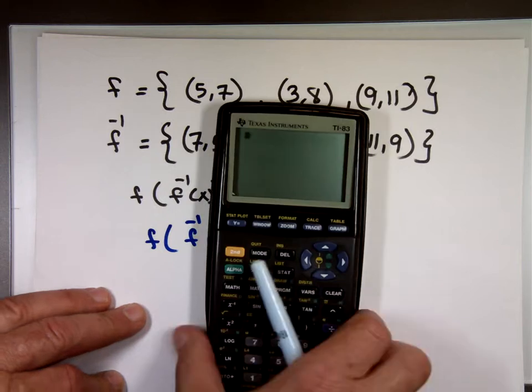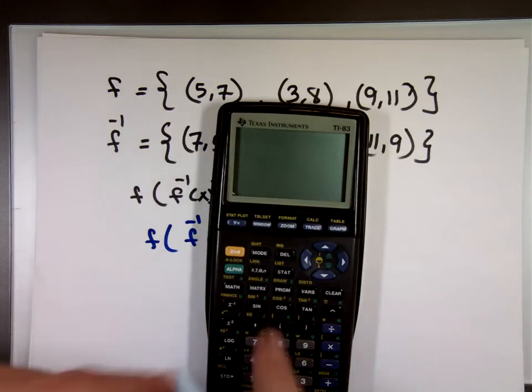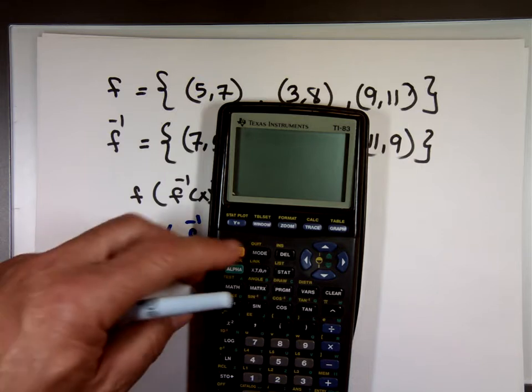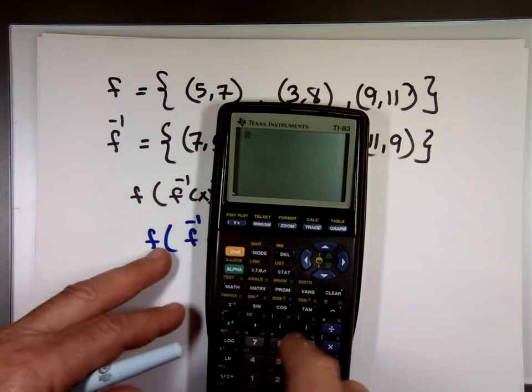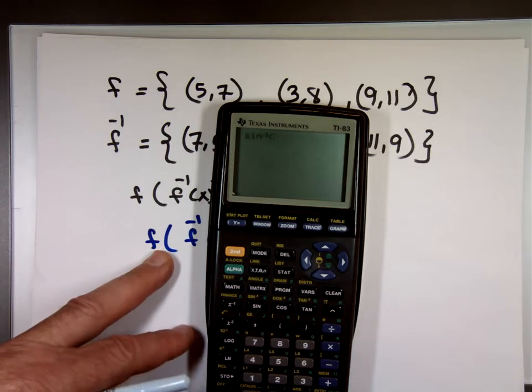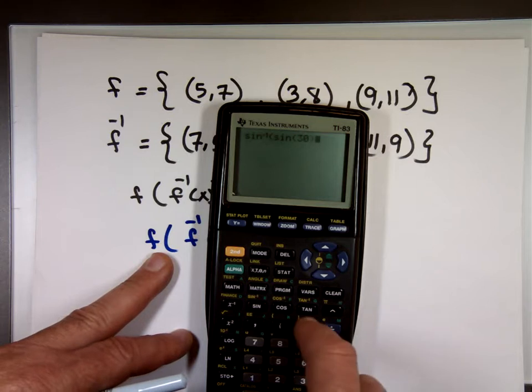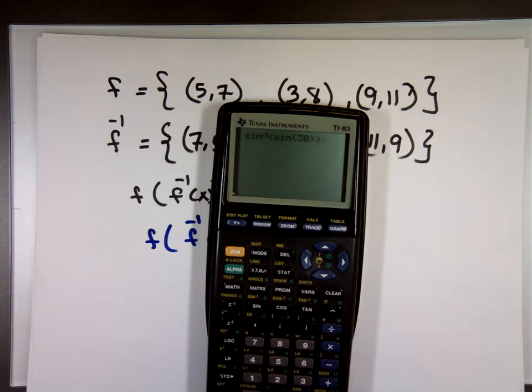On this calculator, on any calculator, you have a sine and the inverse of sine right above it. Sine to the minus 1, cosine to the minus 1. These are the inverse of each other. It doesn't matter which one I hit first. But if I said to you, what is the inverse of sine 30 degrees? If I'm right here, what is the answer should be? Better be 30 degrees.